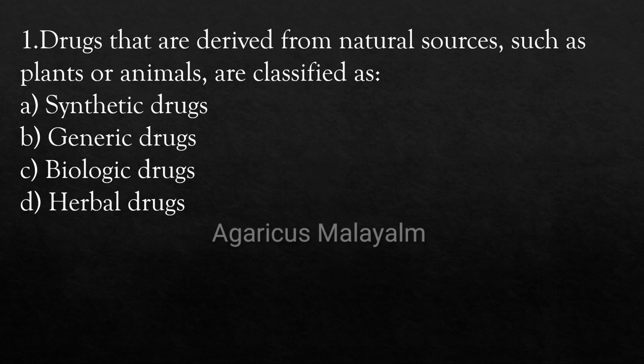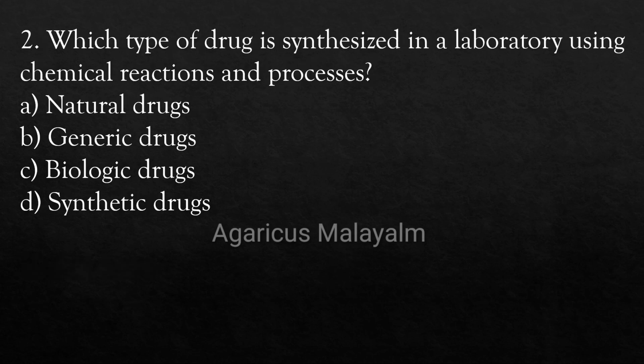Question 1: Drugs that are derived from natural sources such as plants or animals are classified as — Option A: Synthetic Drugs, Option B: Generic Drugs, Option C: Biologic Drugs, Option D: Herbal Drugs. Correct Answer: Option D — Herbal Drugs.